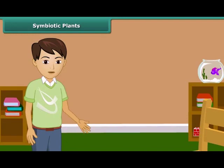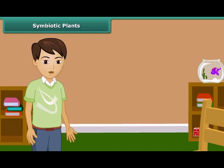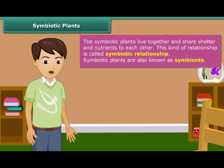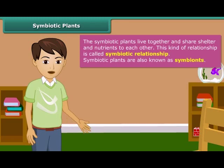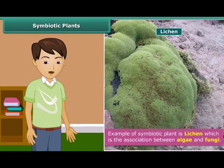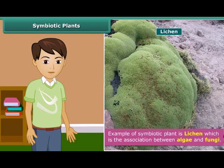The relationship between two dissimilar organisms in which both live together and share shelter and nutrients with each other is called a symbiotic relationship. The organisms involved in this kind of relationship are called symbionts. Lichen is a good example of symbiotic relationship. Lichen is the association between algae and fungi. In this relationship, algae provide food to fungi, and fungi provide protection, absorbed water, and minerals to algae.